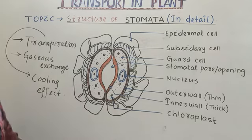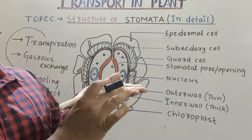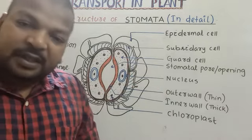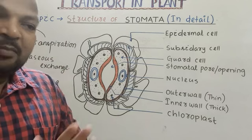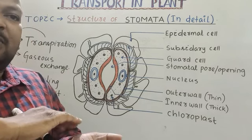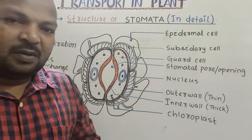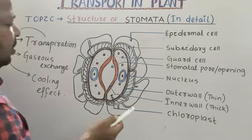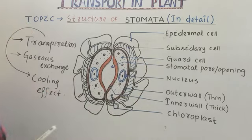Stomata are present on the upper surface of the leaf, in some cases the lower surface of the leaf, or in some plants stomata are equally distributed on both the upper surface and the lower surface. Stomata have three types of cells.